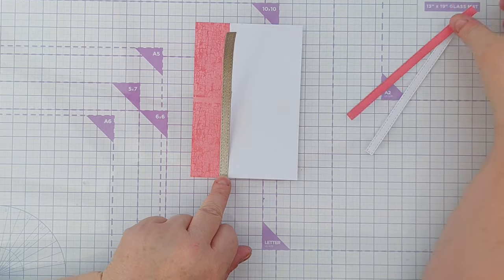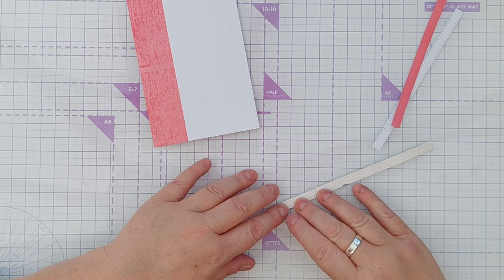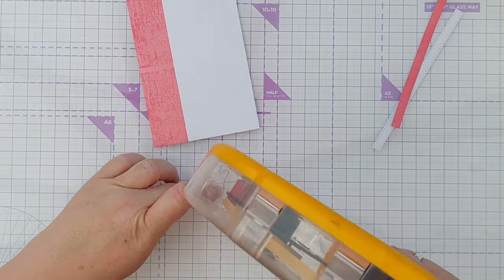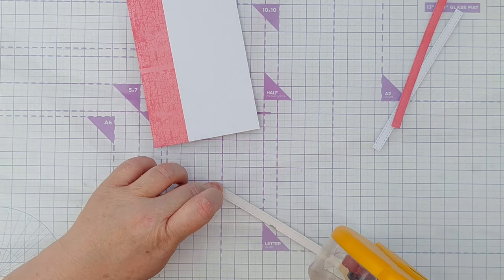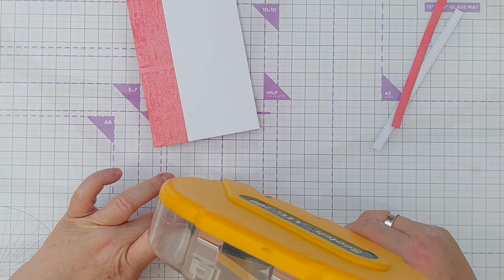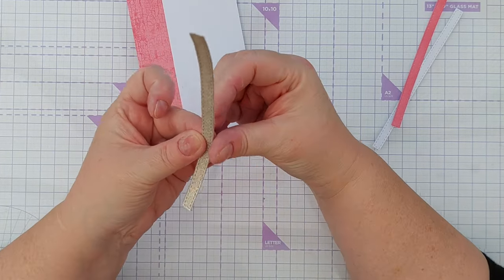So I took my tape runner, put some tape on the back of the gold glitter strip, and then stuck it down to my card panel about a third of the way in from the left. I did use my T-square ruler to try to help me get it on straight.